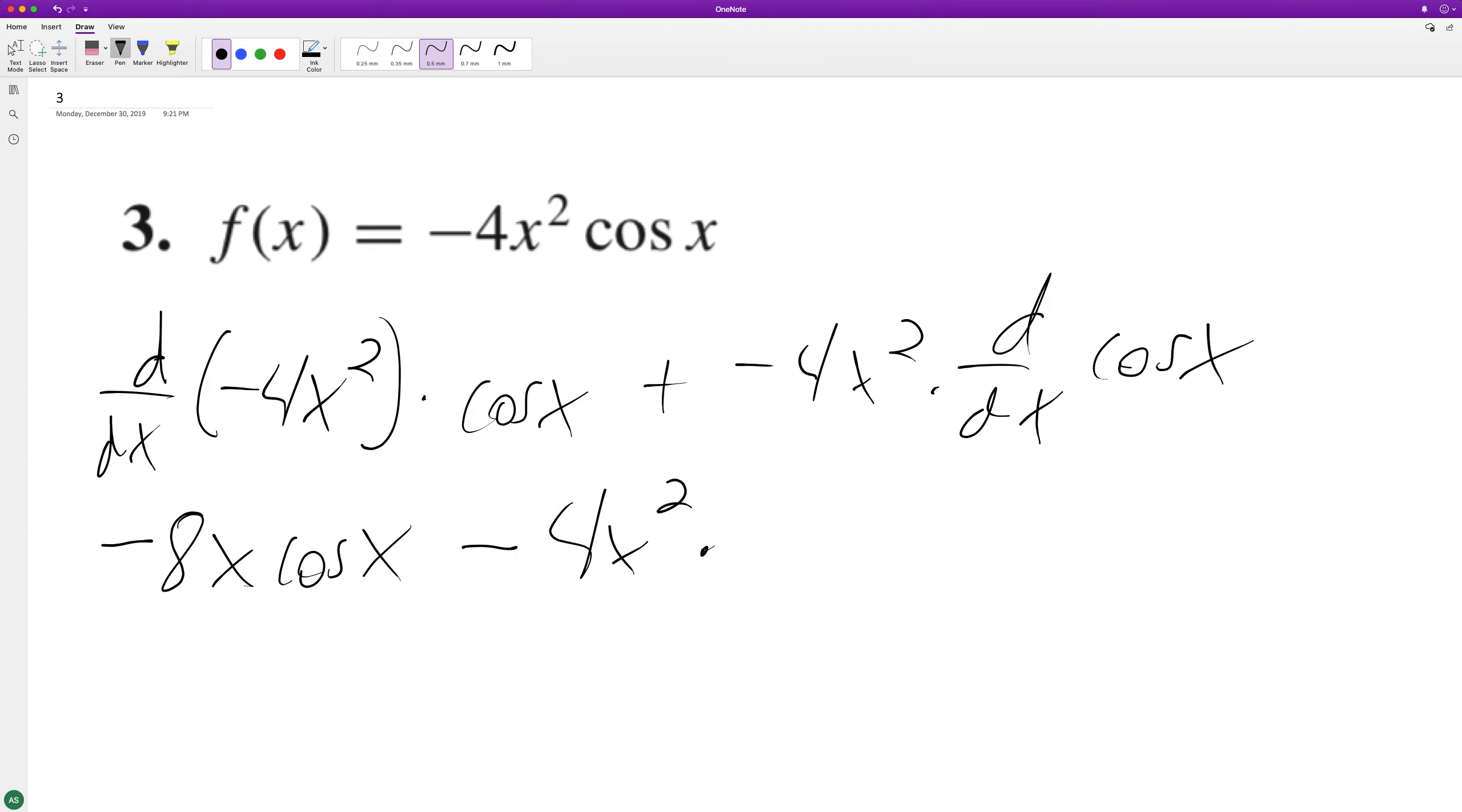And the derivative of cosine is negative sine of x. So we end up with negative 8x cosine x, negative 4x squared, and negative sine of x. That makes plus 4x squared sine of x.